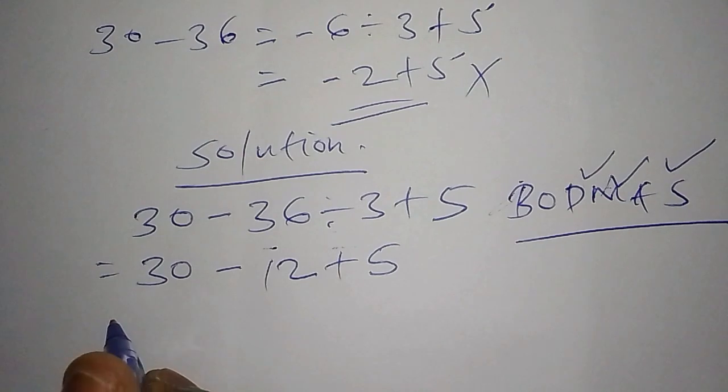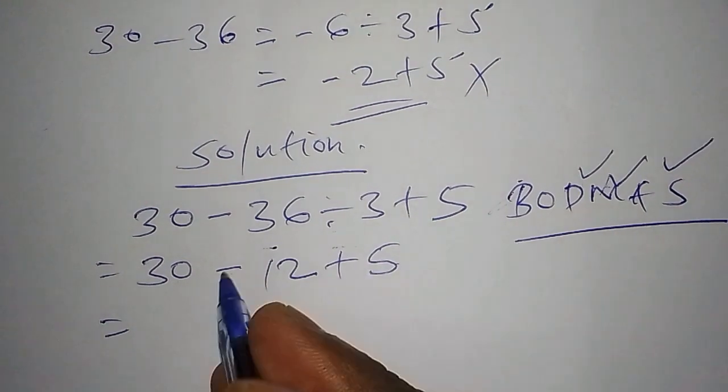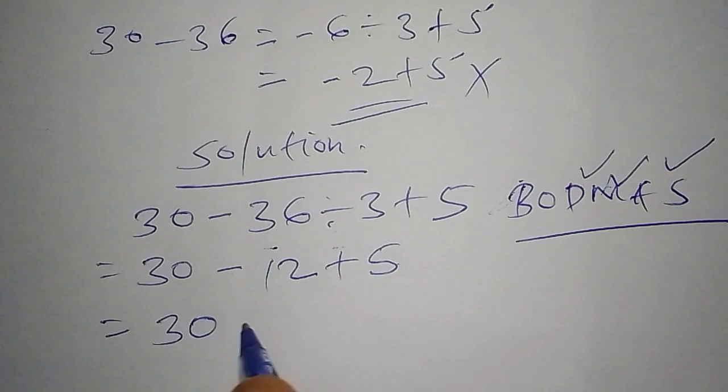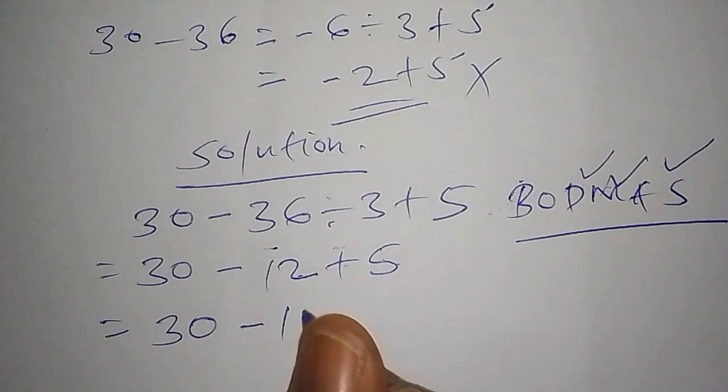So from there, we shall say this one is equals to, don't take 30 minus 12, but take 12 plus 5 first. So here shall be 30 minus 12 plus 5, and 12 plus 5 is 17.